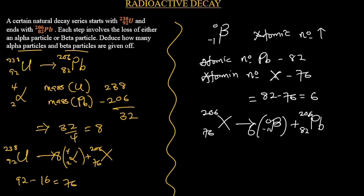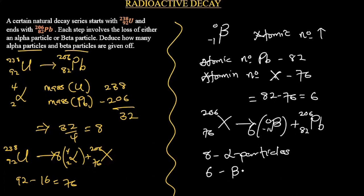So the answer to this question is that we are going to have 8 alpha particles and 6 beta particles emitted. I hope you got the answer to your question. Please check our playlist for more related videos. Thank you.